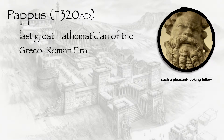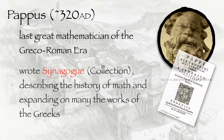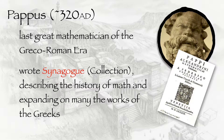At any rate, Pappas must have found some way to study his scholarly predecessors, because he's now recognized as the last great mathematician of the Greco-Roman era, having written an enormous volume of work — most notably the Synagogue, which was an extensive account of previous mathematical works along with his own ideas that were inspired by his predecessors.